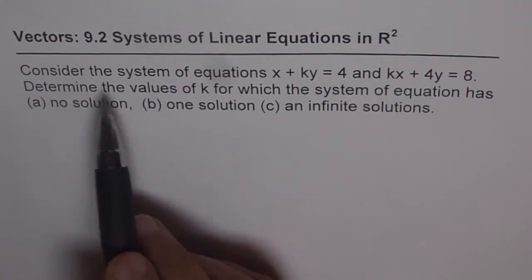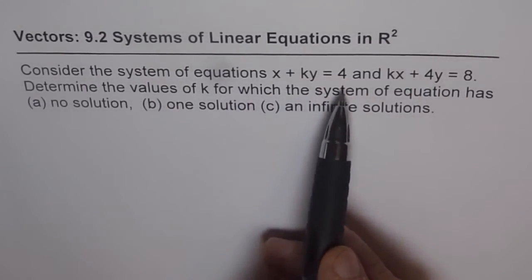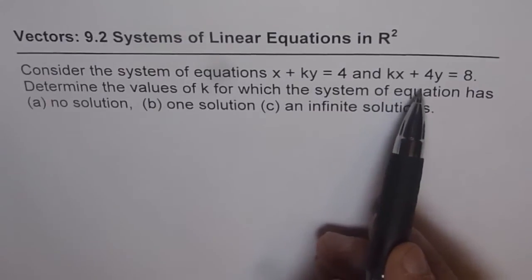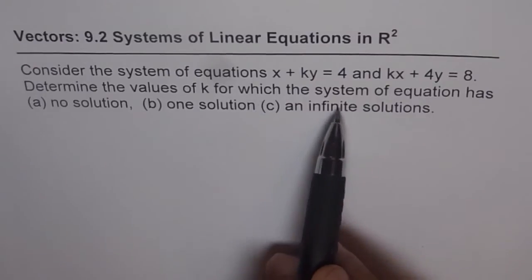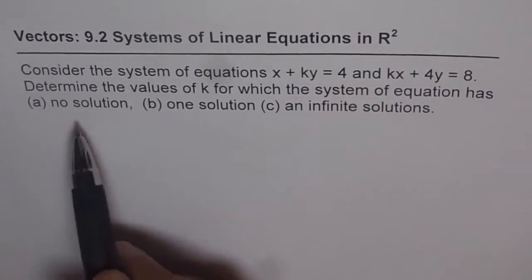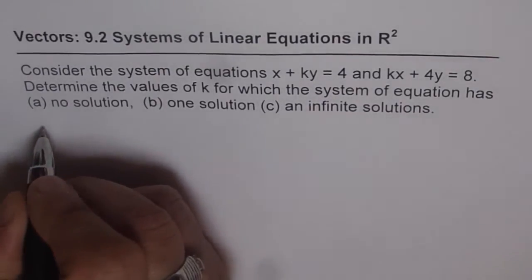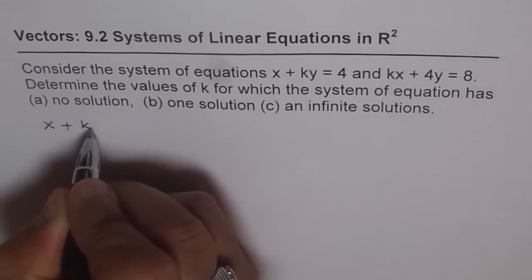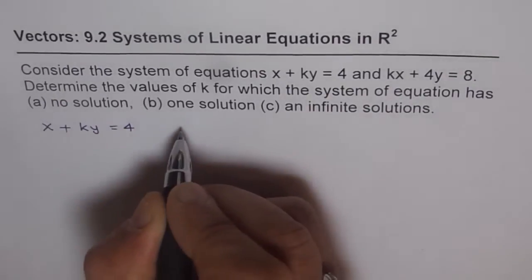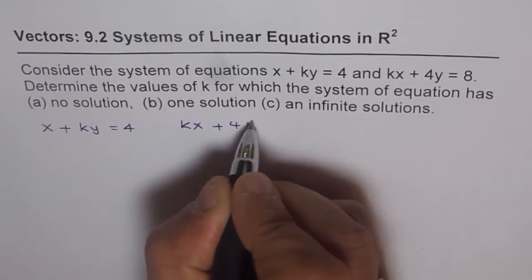The question is: consider the system of equations x + ky = 4 and kx + 4y = 8. Determine the values of k for which the system of equation has no solution, one solution, or infinite number of solutions. So let's begin by writing down our equations.